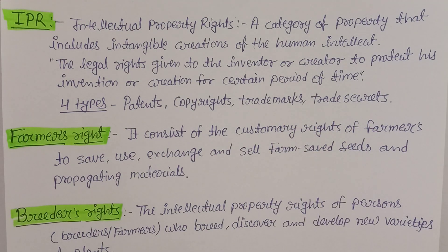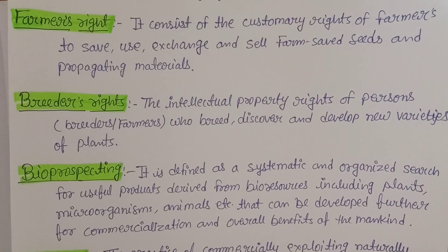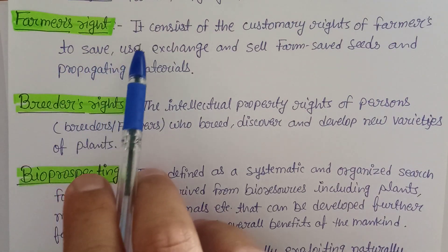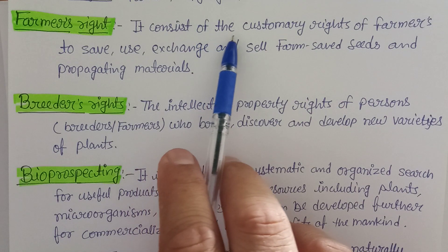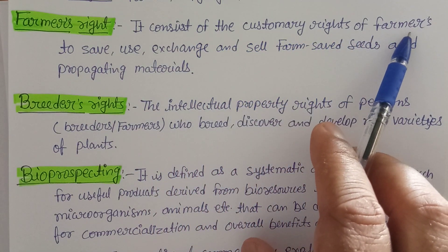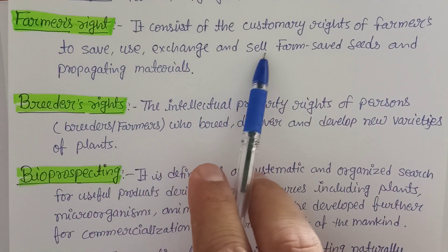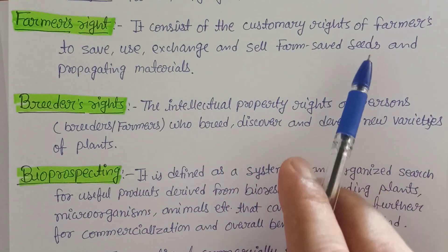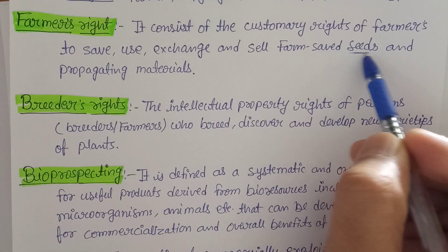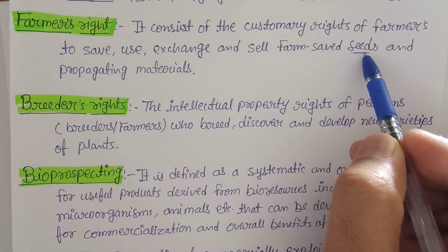The third term given in the syllabus is farmers' rights. Farmers, meaning cultivators, have rights too. Farmers' rights consist of the customary rights of farmers to save, use, exchange, and sell farm-saved seeds. Seeds are the main things with which we initiate the propagation of a particular plant crop.